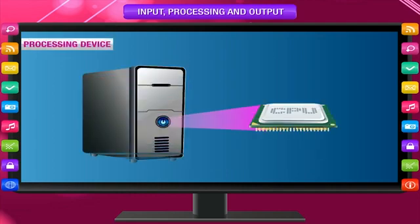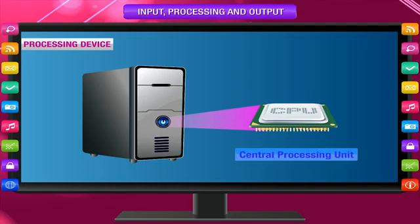Processing Device: A computer has a small chip called the CPU. The full form of CPU is Central Processing Unit. The CPU is the main component which is used to manipulate data.